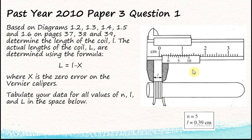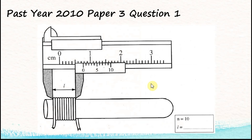The first reading has n equal to 5 and l equals 0.39 cm. The second image has n equal to 10, and reading the vernier scale gives 0.77 cm. The reading is in cm, so the answer is 0.77 cm. I'm not going to show all the readings — let's go straight to the table.